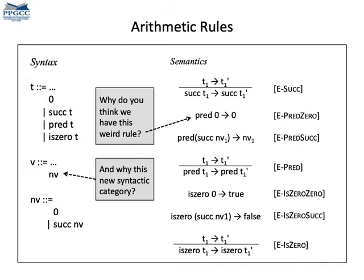We can augment our language with the arithmetic rules. Here they are. Now we have two new types of values, zero and succ of nv, where nv is a number. I have defined them right here. And we have seven new evaluation rules, which you can see on the right side of the figure.